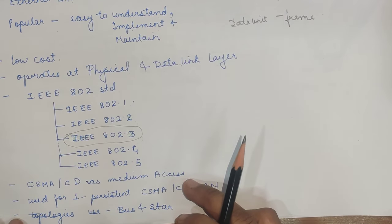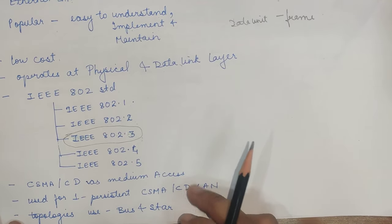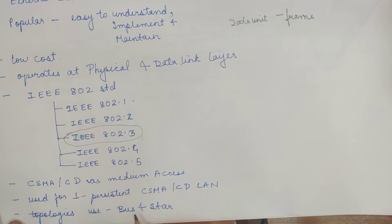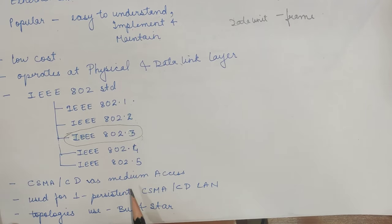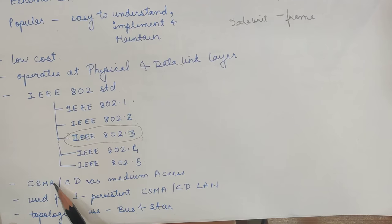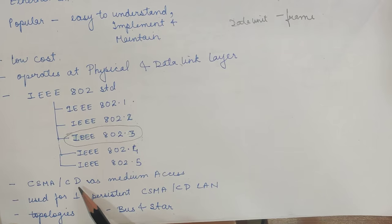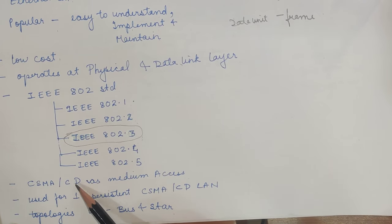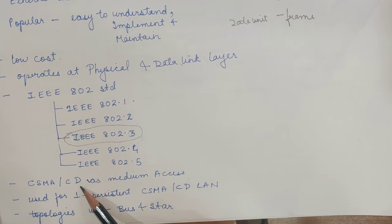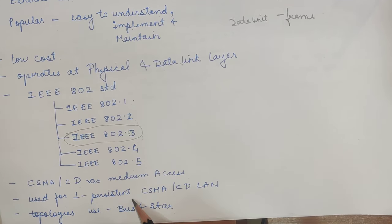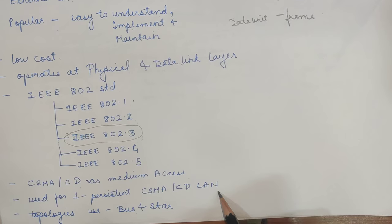Ethernet 802.3 uses different kinds of topologies like bus and star. It uses CSMA/CD as a medium access protocol. CSMA/CD stands for Carrier Sense Multiple Access with Collision Detection. It uses the one-persistent CSMA/CD method.